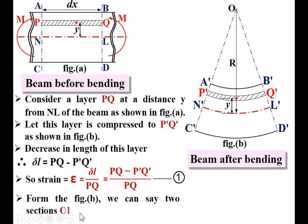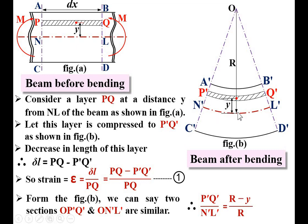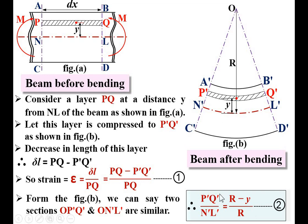From Figure B, the two sections — triangle O-P'Q' and triangle O-N'L' — are similar. Therefore: P'Q' / N'L' = (R − y) / R. Here, P'Q' corresponds to radius (R − y) and N'L' corresponds to radius R. This is Equation 2, and it is a very important equation.